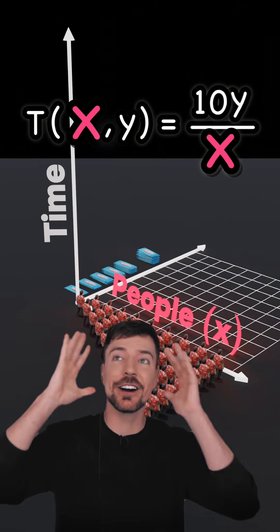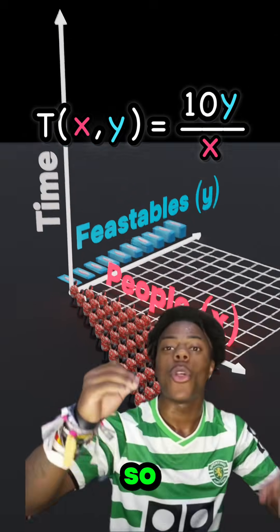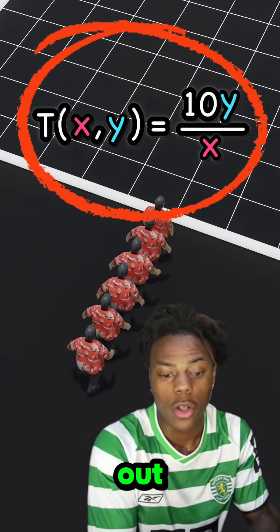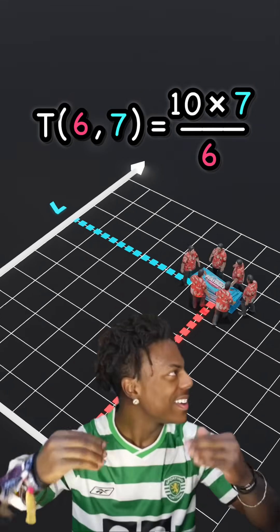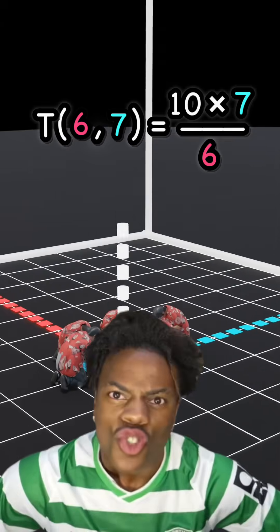So with this function we can work out that the time it takes for six people to eat seven bars is going to be 12 seconds. Oh, wait guys, so do you have to plot that going upwards?